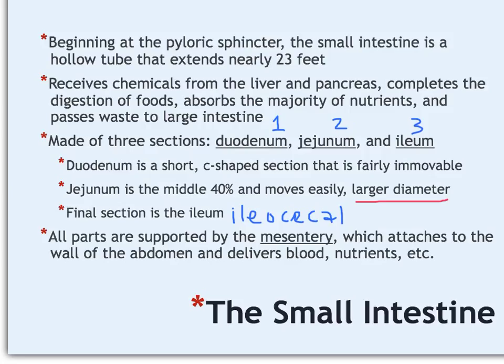All parts of the small intestine are supported both nutritionally and physically by a structure called the mesentery, which is a thin, flat layer of connective tissue that attaches to the wall of the abdomen and to the wall of the small intestine, so that while it's anchored there's still some flexibility.